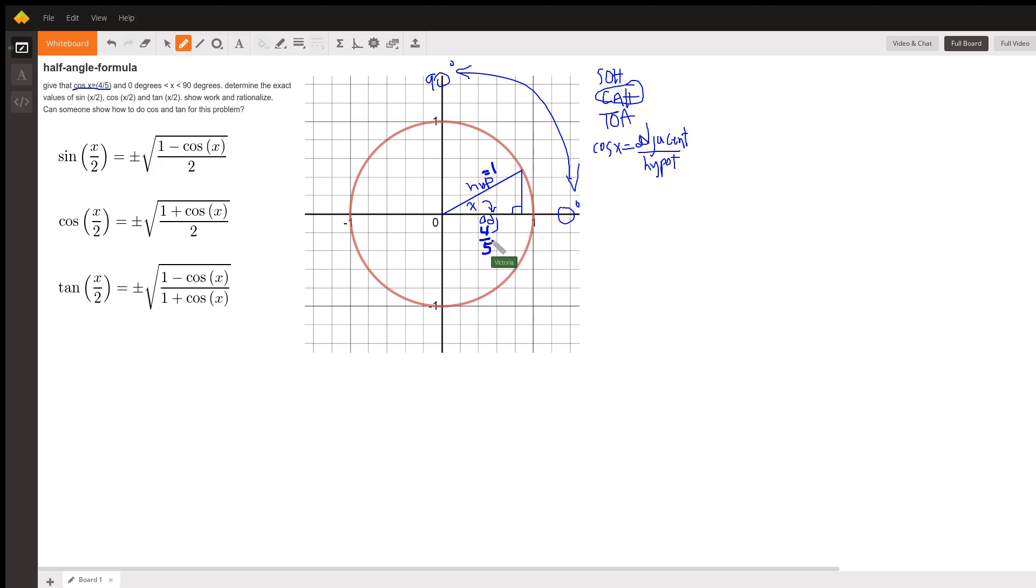And now you can just do the Pythagorean theorem, a squared plus b squared equals c squared, and find out that this shorter vertical height is 3 fifths.